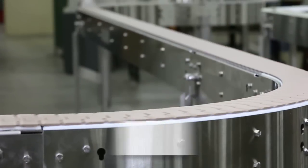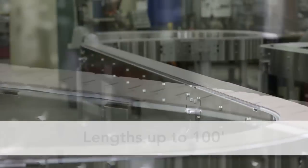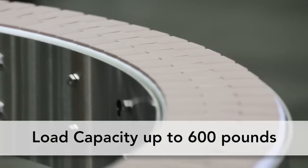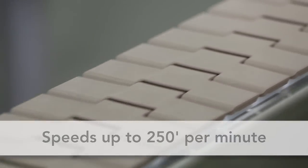Dorner's 7100 Conveyor can be used for long runs up to 100 feet, can handle loads up to 600 pounds and can run up to 250 feet per minute.